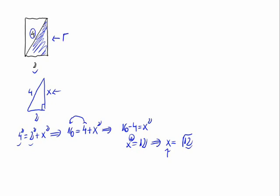So this side length here, that is the height, is the square root of 12. The area of this rectangle is base times height, that is 2 times the square root of 12. We can leave it like this.